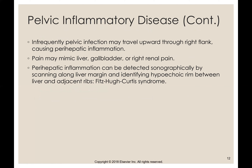Sometimes the pelvic infection can travel upwards to the right flank, causing perihepatic inflammation and affecting the liver. This can be detected sonographically by scanning along the liver margin and identifying a hypoechoic rim between the liver and adjacent structures. It's called Fitzhugh-Curtis syndrome — essentially an inflamed liver.